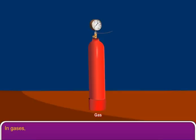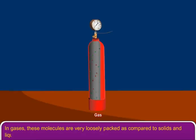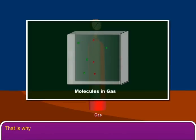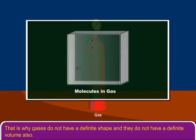In gases, these molecules are very loosely packed as compared to solids and liquids. They have a lot of space in between to move about freely. That is why gases do not have a definite shape and they do not have a definite volume also.